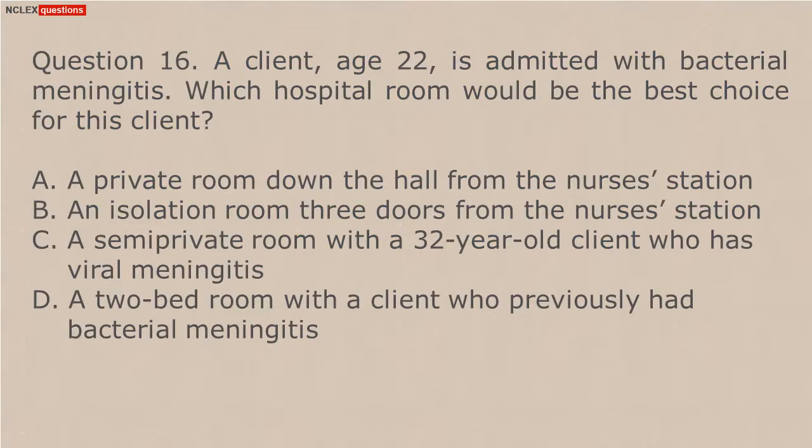Question 16. A client, age 22, is admitted with bacterial meningitis. Which hospital room would be the best choice for this client? A. A private room down the hall from the nurse's station. B. An isolation room three doors from the nurse's station. C. A semi-private room with a 32-year-old client who has viral meningitis. D. A two-bed room with a client who previously had bacterial meningitis.